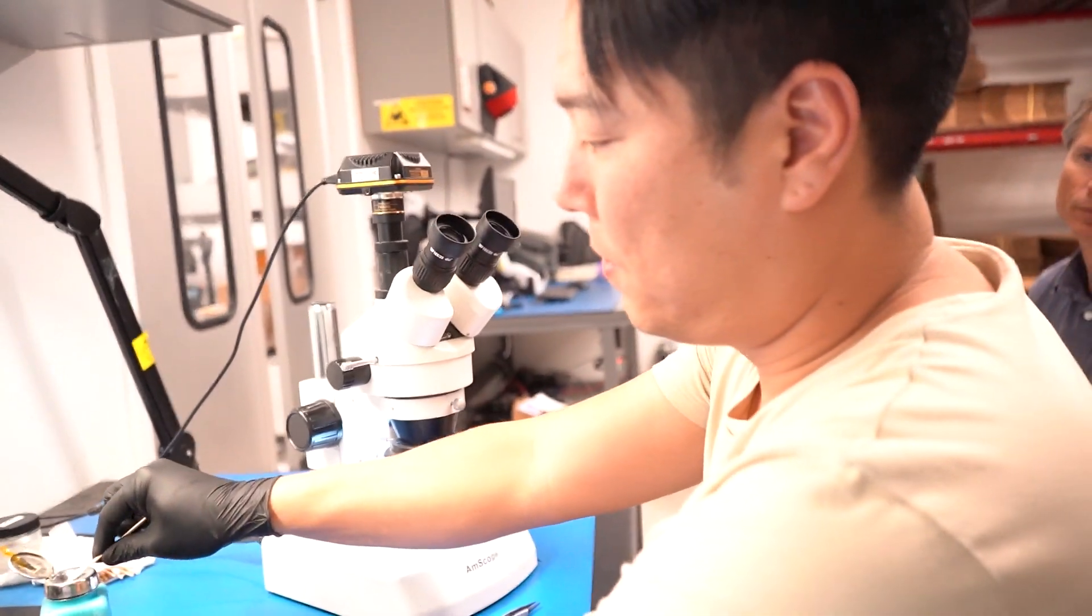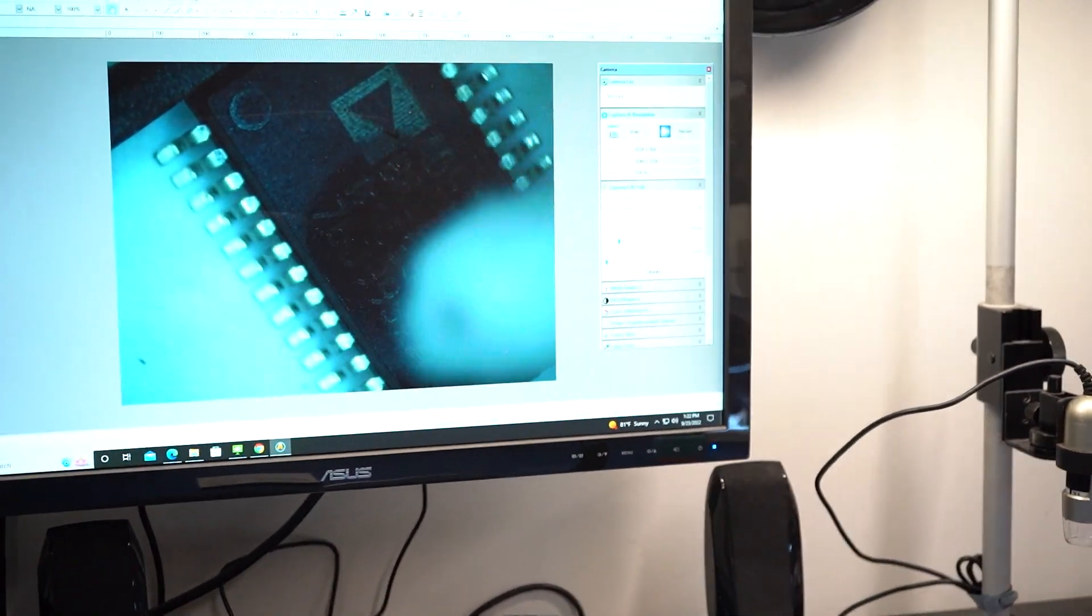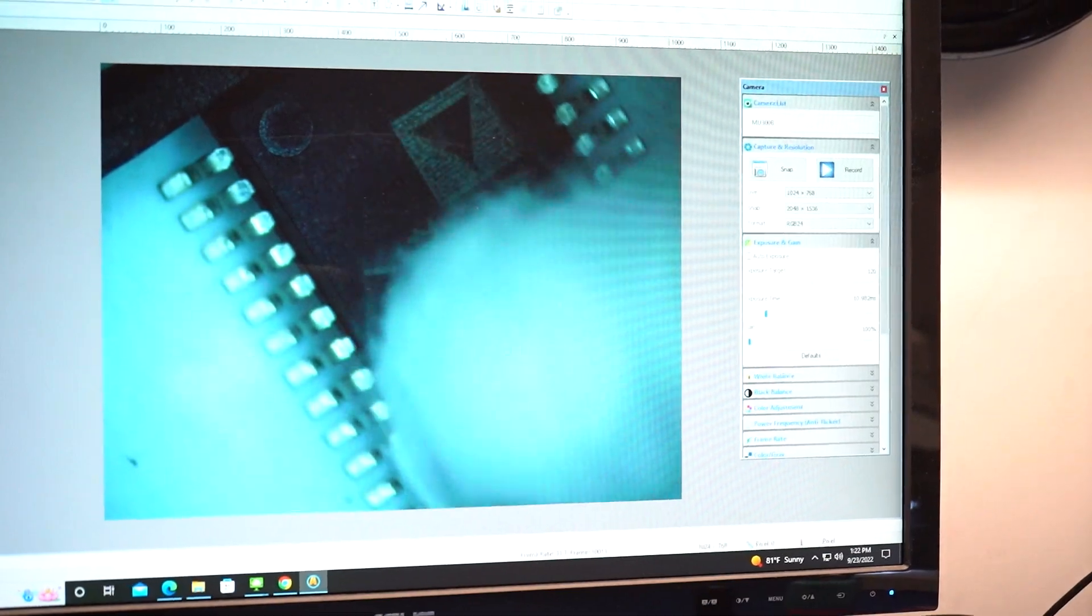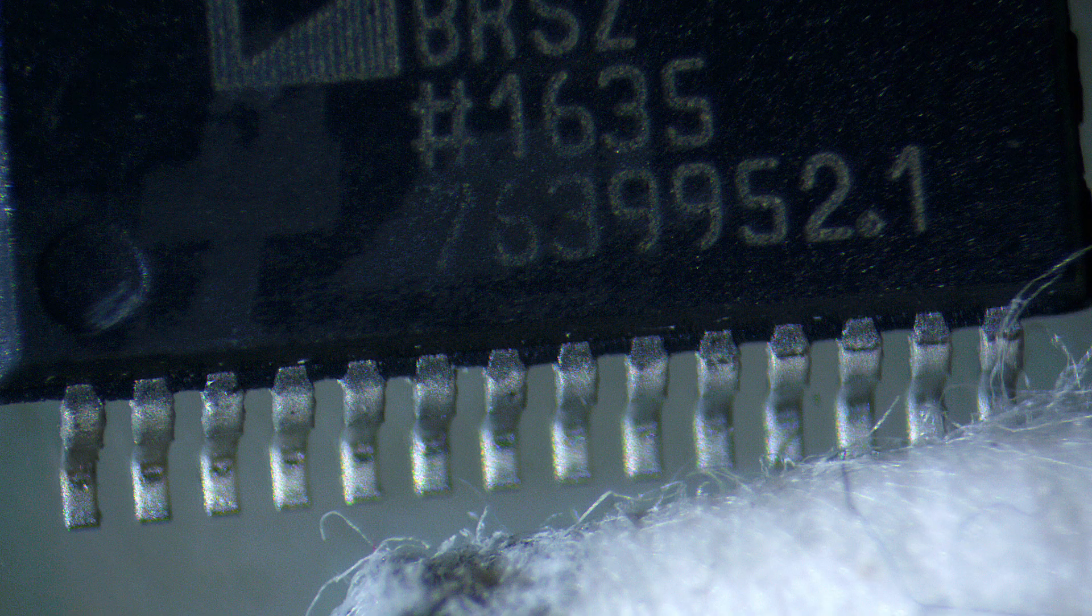And then when we do acetone, the black one kind of comes off slowly, but it starts. The top coat starts to kind of melt and that's kind of unusual.